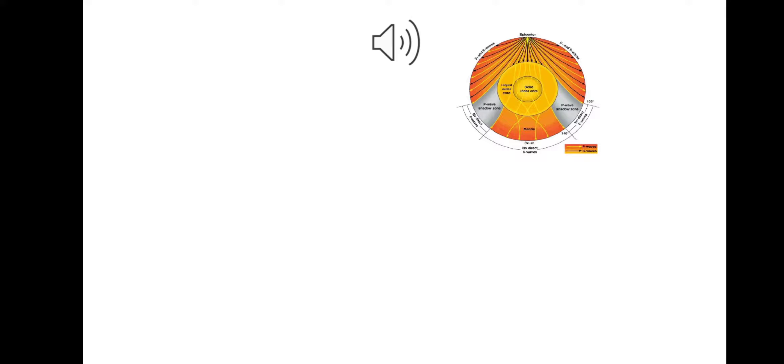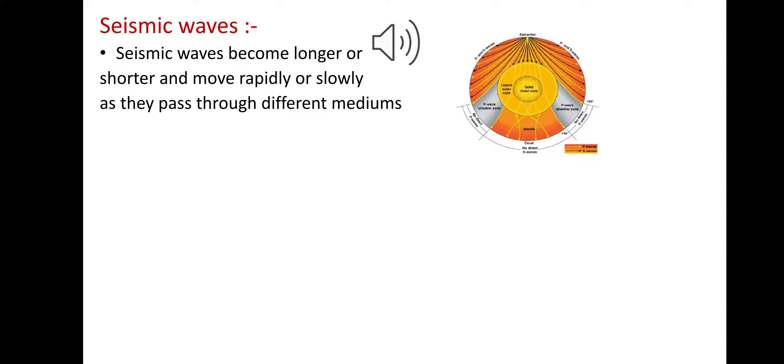Our next point is seismic waves. Seismic waves become longer or shorter and move rapidly or slowly as they pass through different mediums like solid, liquid, and gas. From seismic waves—their speed, their direction of movement—we can obtain a comprehensive idea about the interior of the Earth. There are two main types of seismic waves.